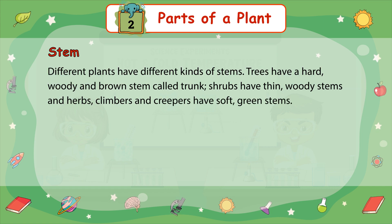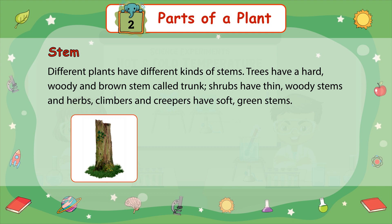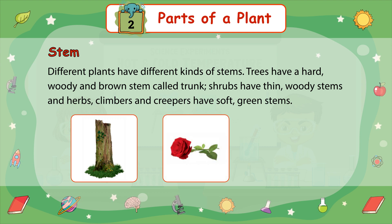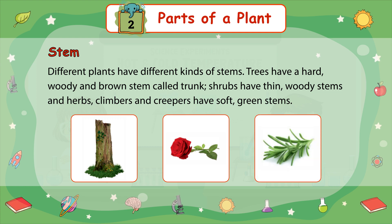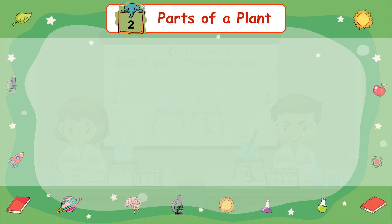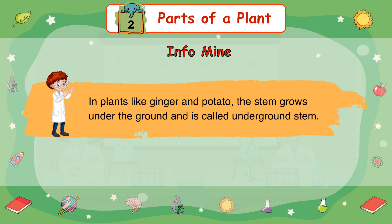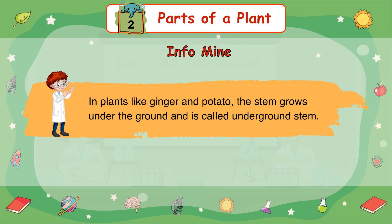Different plants have different kinds of stems. Trees have a hard, woody, and brown stem called trunk. Shrubs have thin, woody stems, and herbs, climbers, and creepers have soft, green stems. In plants like ginger and potato, the stem grows under the ground and is called an underground stem.